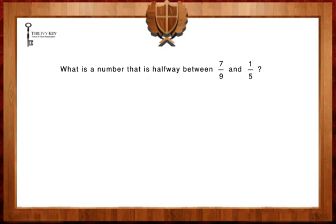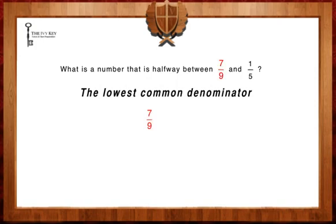The first step to solving this question is to find the lowest common denominator for our two fractions, seven ninths and one-fifth. We can find the lowest common denominator by listing the first few multiples of nine and five.